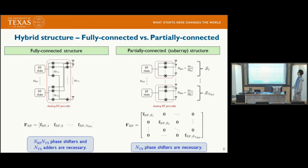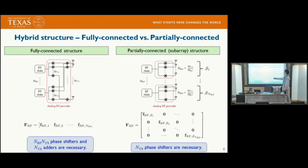There are two different types of hybrid structure. One is the fully-connected structure and the other is the partially-connected structure, known as the sub-array structure. In the fully-connected structure, each RF chain is connected to all antennas, so the analog pre-coder can be represented as an N_RF by N_TX matrix.